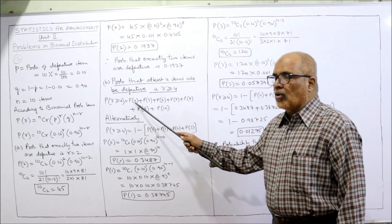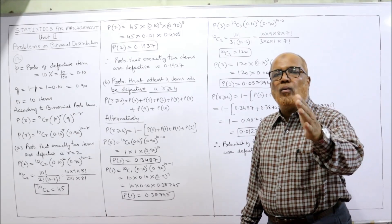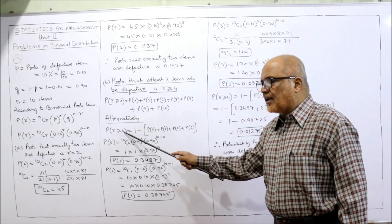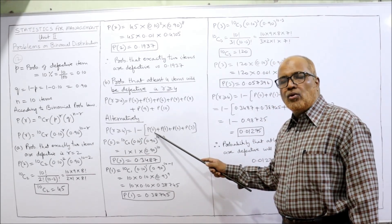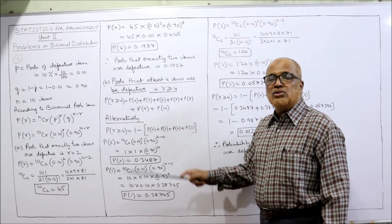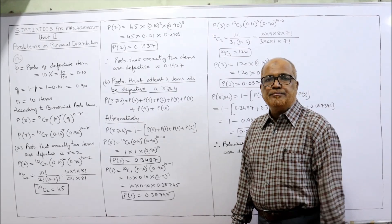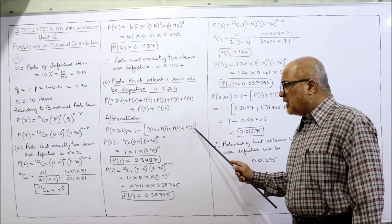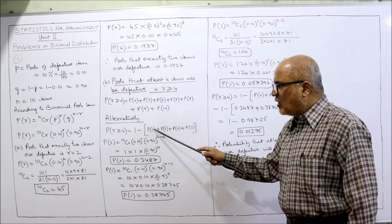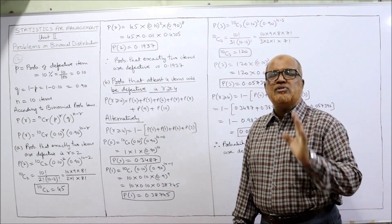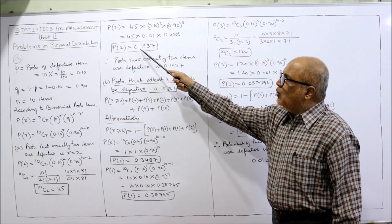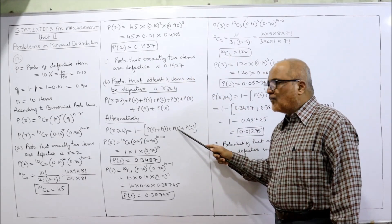The shortcut: P(R ≥ 4) = 1 − [P(0) + P(1) + P(2) + P(3)]. Values below 4 are 0, 1, 2, 3, so we add those four probabilities and subtract from 1. Since P(2) = 0.1937 is already calculated, we only need to find P(0), P(1), and P(3) — effectively 3 new calculations.